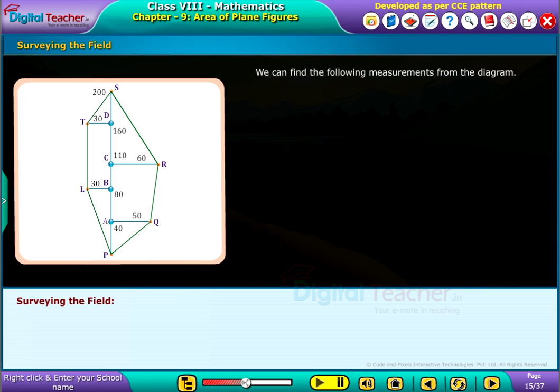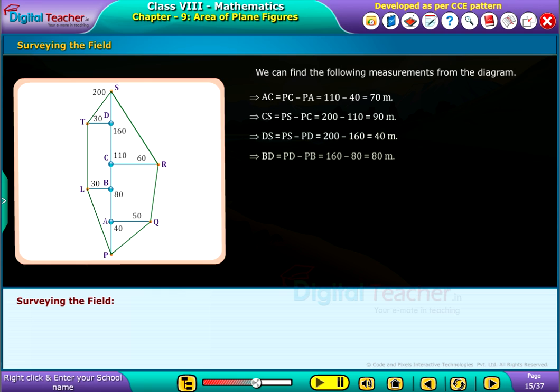We can find the following measurements from the diagram. AC equals PC minus PA equals 200 minus 110 equals 90 meters. DS equals PS minus PD equals 200 minus 160 equals 40 meters. BD equals PD minus PB equals 160 minus 80 equals 80 meters.